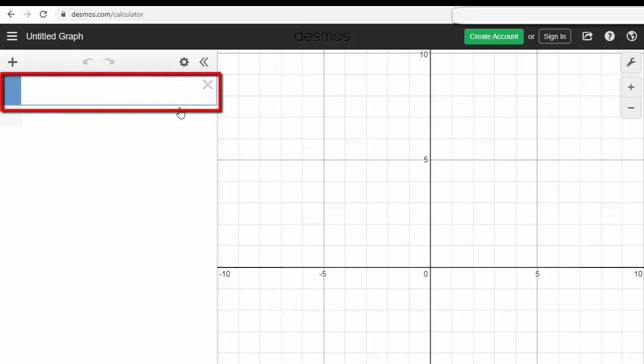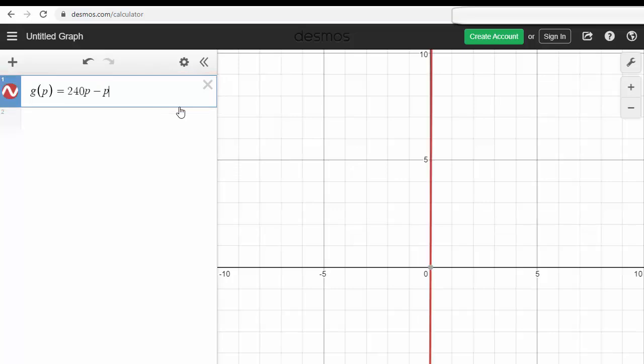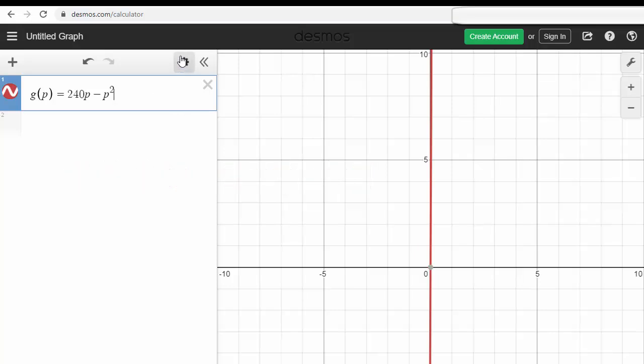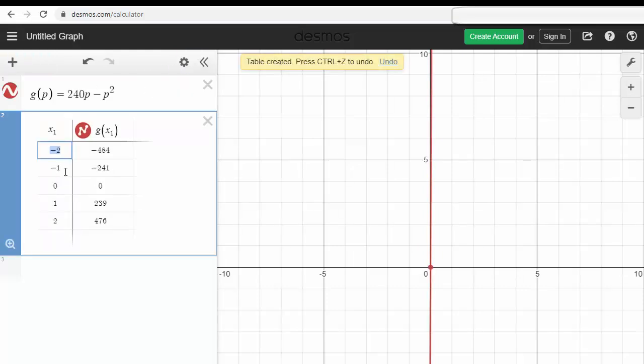When you first get to the Desmos website, it will look like this. On the left-hand side is where you can enter your function, g of p equals. To get a square, you have to go shift 6 and 2. That will give you p squared. On top of that function, you will see a little wheel. If you click on it, you'll see a little table. So you can create a tabular representation of your function. You'll have to enter the coordinates. We have 50, 100, 150, 200, and 240.